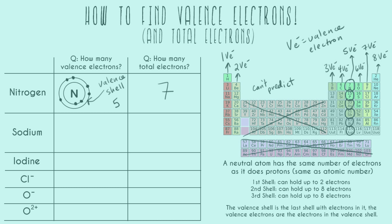Let's do another drawing example for sodium. For sodium's total electrons, we find it on the periodic table over on the left-hand side at number eleven, so it has eleven total electrons when it's neutral. To find its valence electrons, we can draw this out, and then I'll start just using the shortcut.